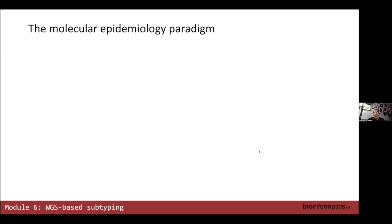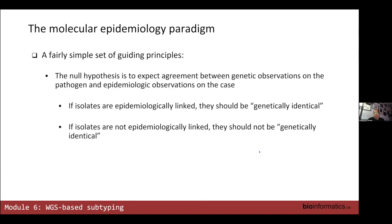The basic paradigm is fairly simple: if isolates are epidemiologically linked, then they should be genetically identical or very similar. The reverse is also true — if they're not linked, then they should not be similar genetically.